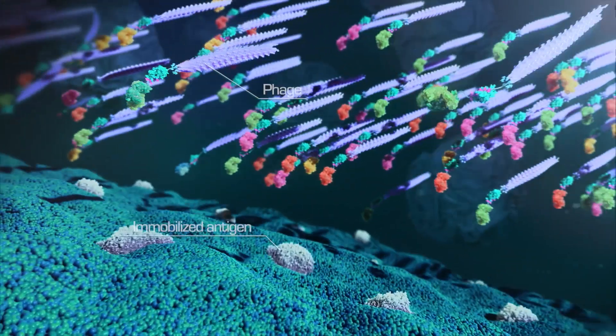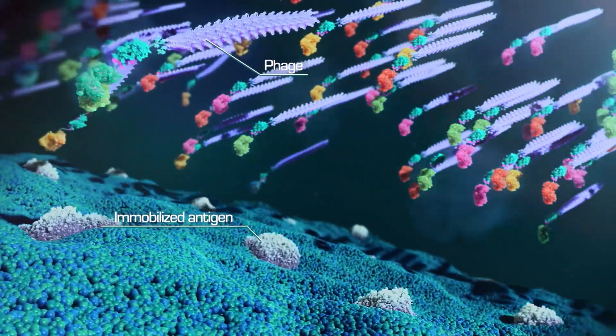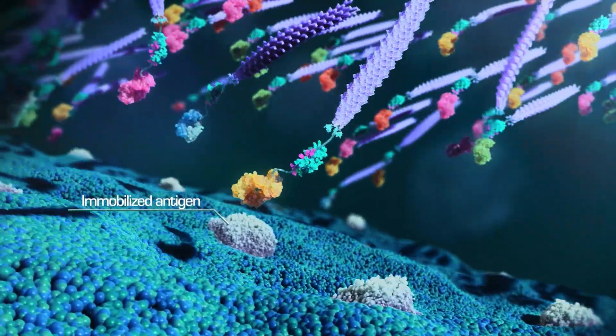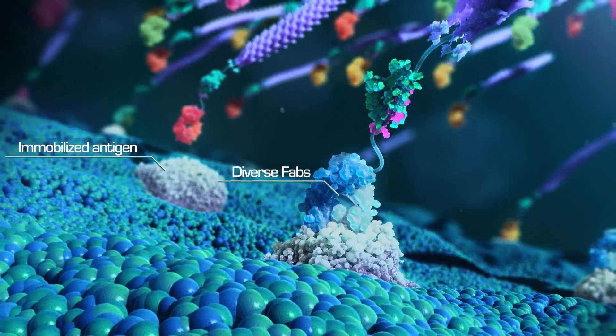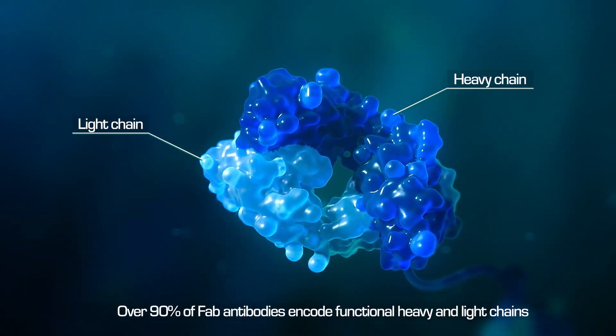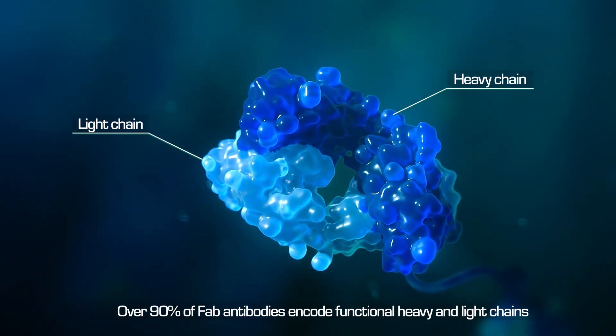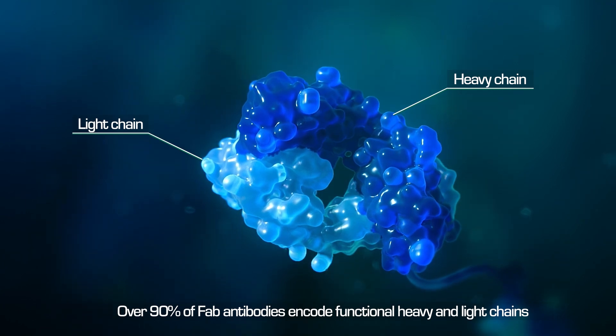The Pioneer Library is one of the largest functional phage display fab libraries created. It is a collection of over 200 billion unique antibody encoding sequences, of which the unprecedented value of 90% encode for functional heavy and light chains.